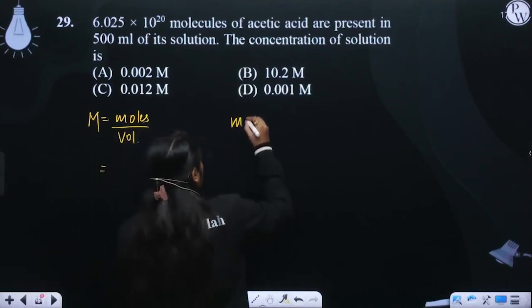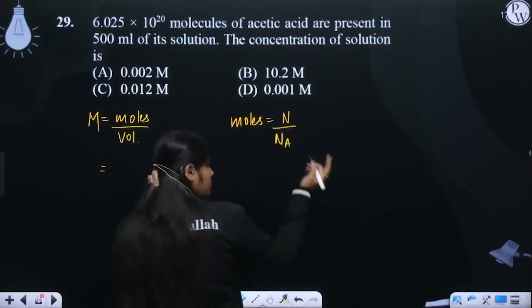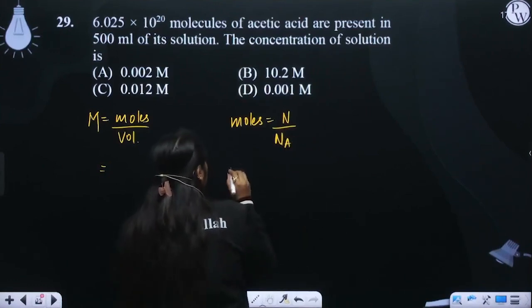In the beginning, we have to determine the moles, so we have to divide the molecules by Na. We know that in one mole, Na molecules are present.